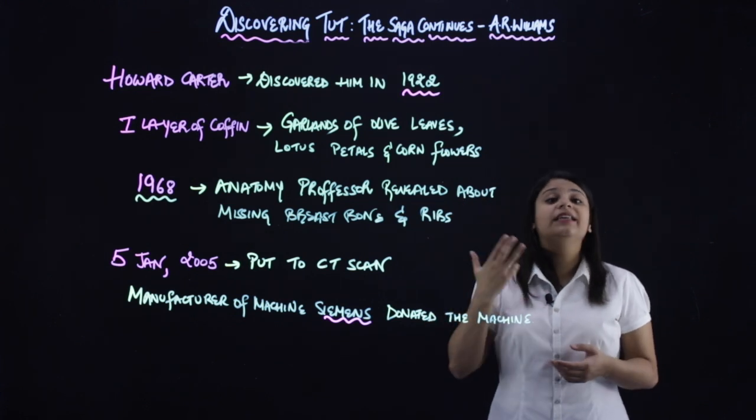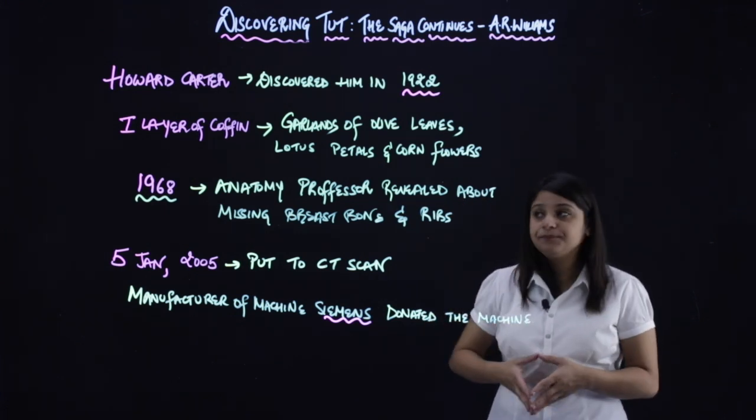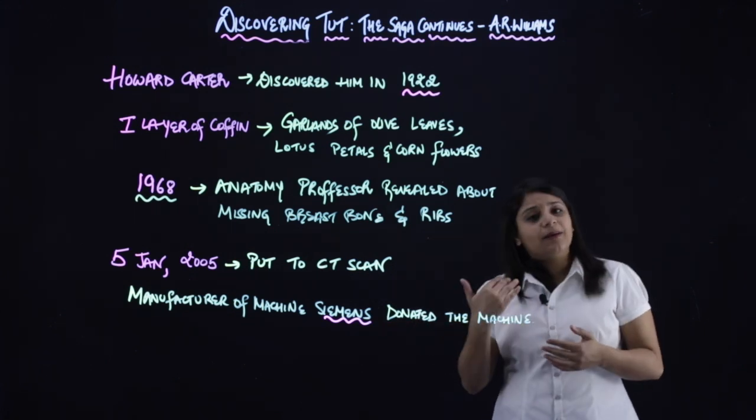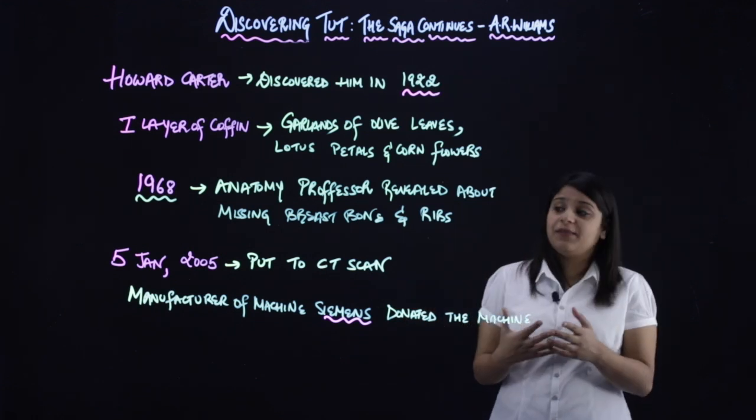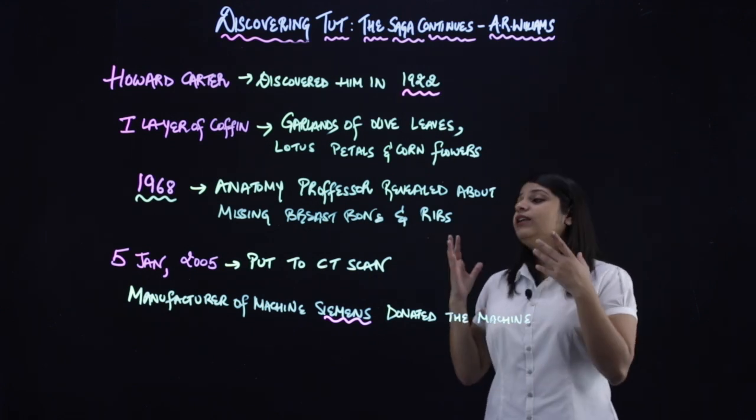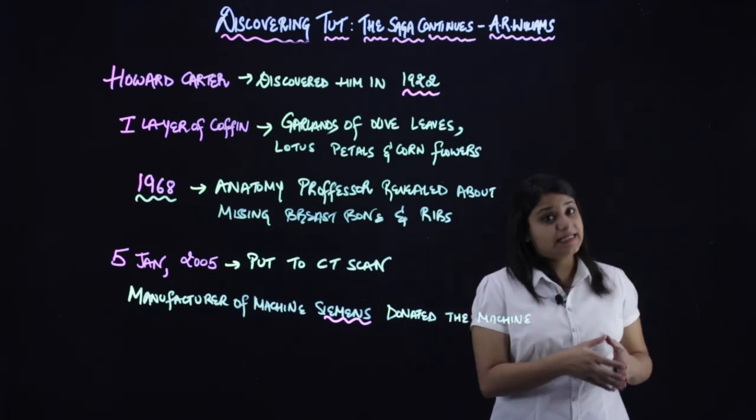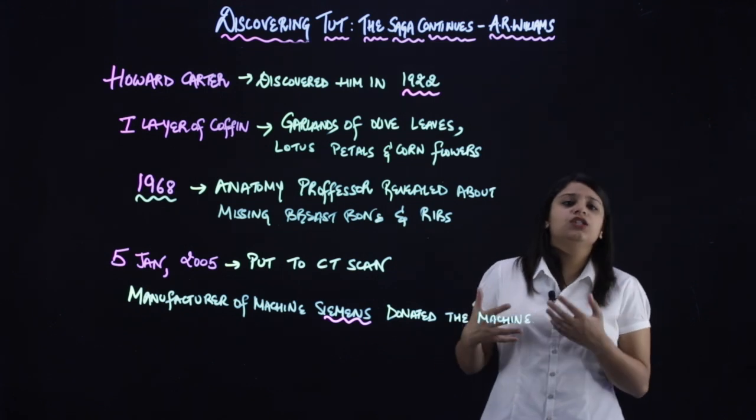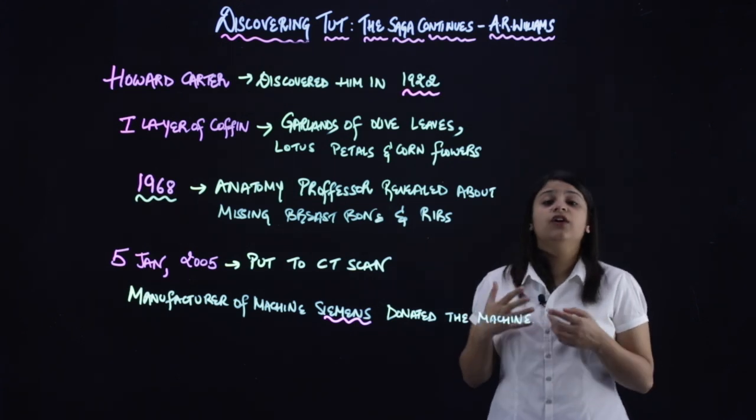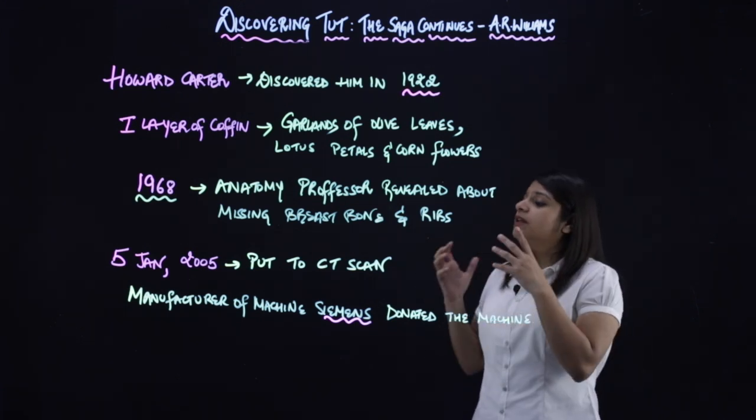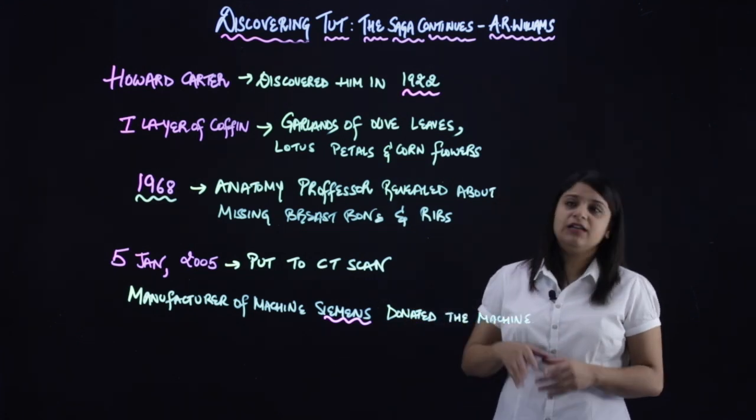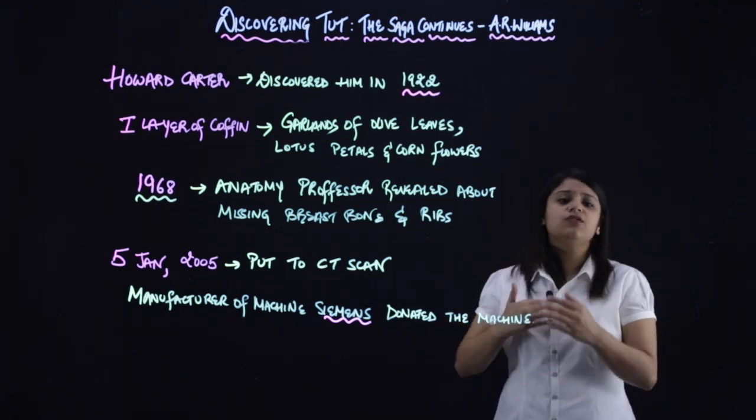He found that his body was buried in a three layer gold coffin, which had garlands of olive leaves, lotus petals, and corn petals. And then you will see how in 1968, an anatomy professor when she studied him, x-rayed him, she found out that his breast bone and ribs are missing. And then again his body was brought to study on 5th January 2005, it was put to CT scan, he was the first mummy who went to the CT scan, and the manufacturer of the machine himself donated this CT scan machine for this purpose.